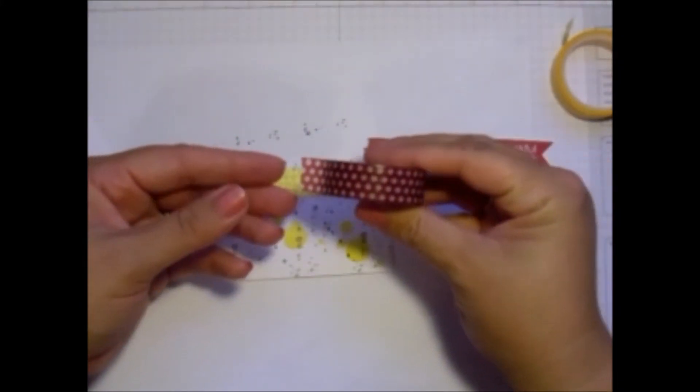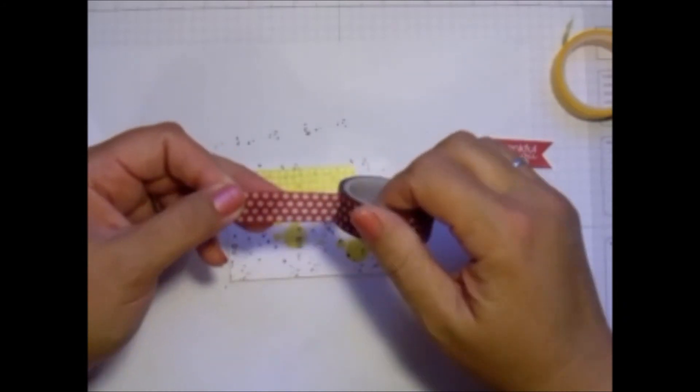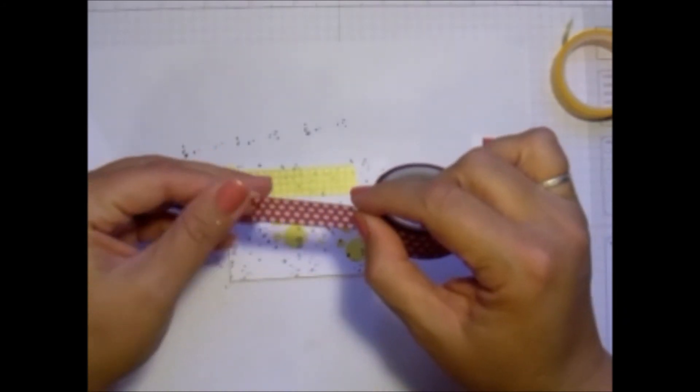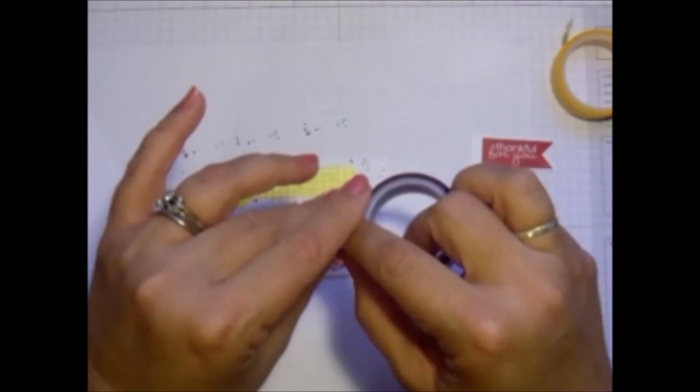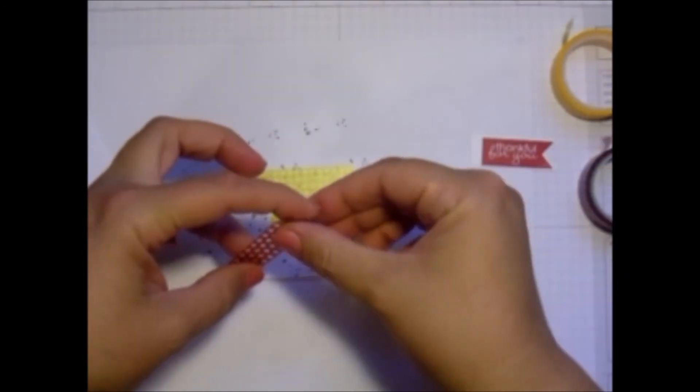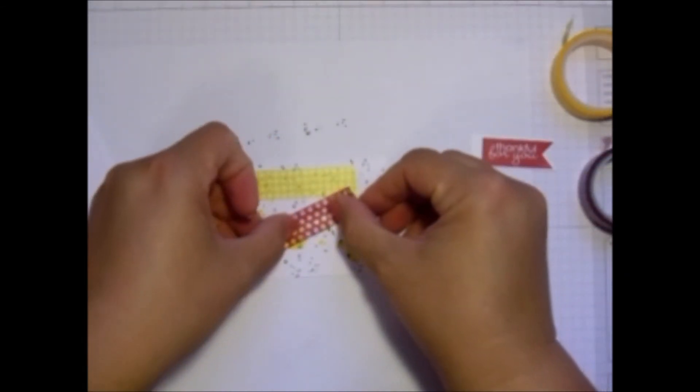And then I'm going to take some of the Cherry Cobbler from the Christmas washi tape. Tear off a little piece of that. Kind of just put it at a diagonal here.